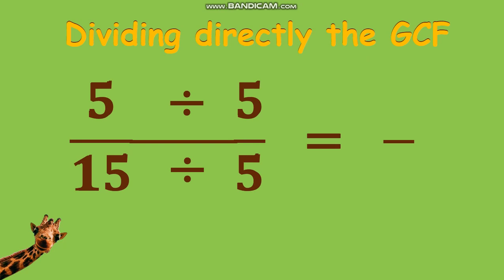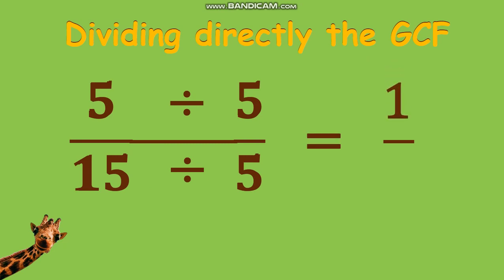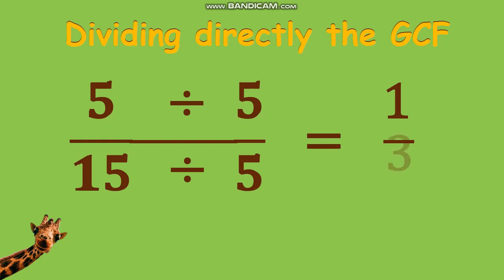First is by dividing directly the GCF you find, which is 5. 5 divided by 5 equals 1, which is your numerator, and 15 divided by 5 equals 3, which is your denominator. Therefore, the lowest term of 5 fifteenths is 1 third.